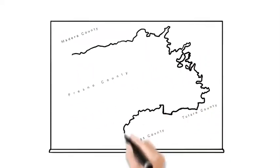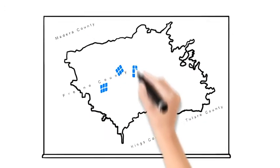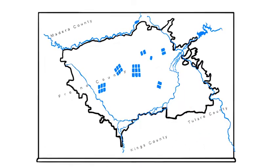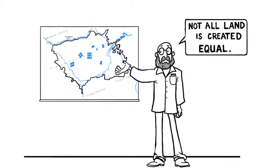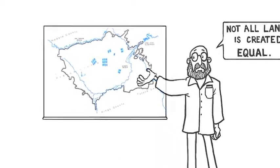Now, if the ground layer was exactly the same across the entire Kings Basin, we could build recharge basins wherever we wanted. But geologists have told us, and we feel inclined to believe them, that not all land is created equal.